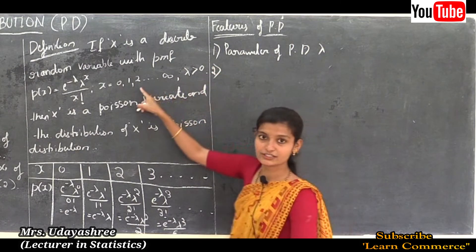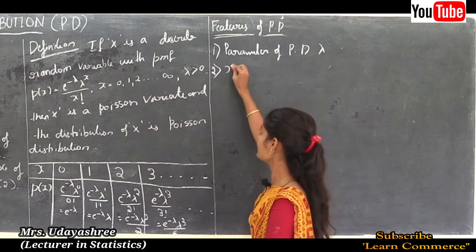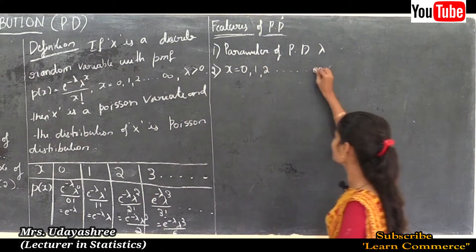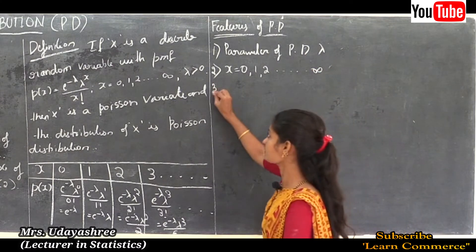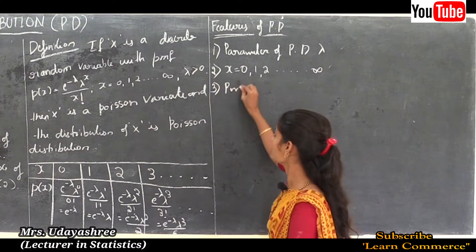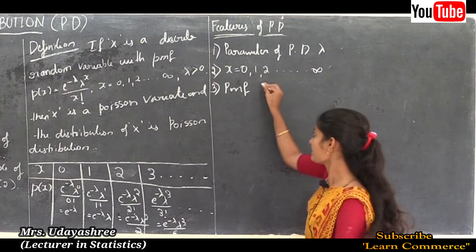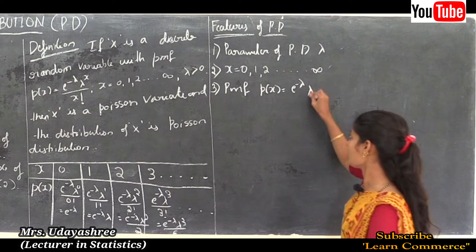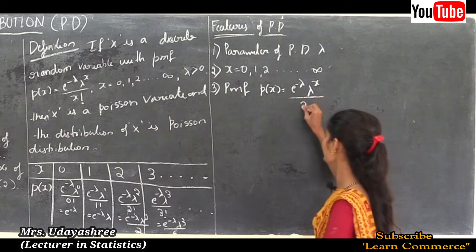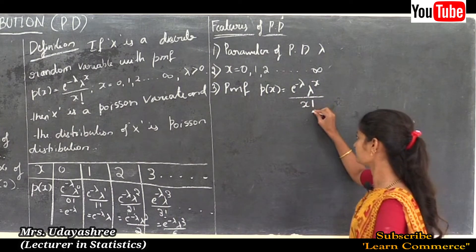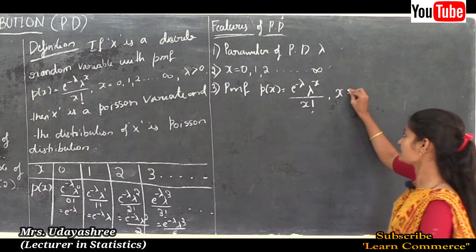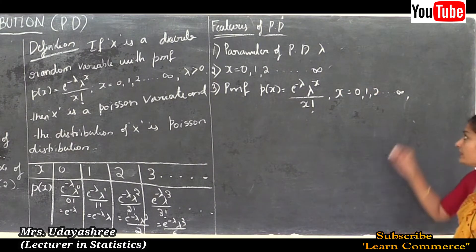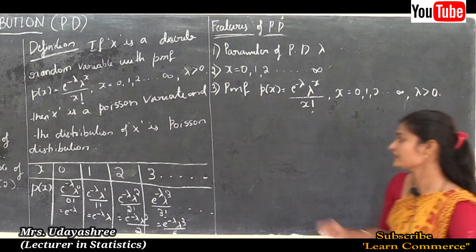First, the parameter of Poisson distribution is lambda. Second, the range of Poisson distribution is x = 0, 1, 2 up to infinity. Third, the PMF of Poisson distribution is P(x) = e^(−λ) · λ^x / x!, where x takes values 0, 1, 2 up to infinity and lambda is always positive.